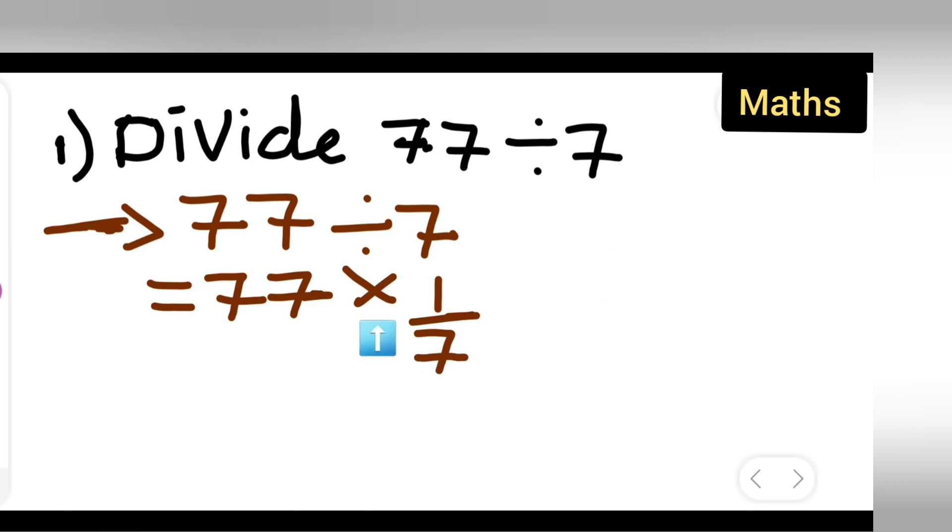So multiply by this. What answer are you going to get? 77 upon 7. So 7 ones are 7, 7 ones are 7, 7 ones are 7. So your answer is 11.